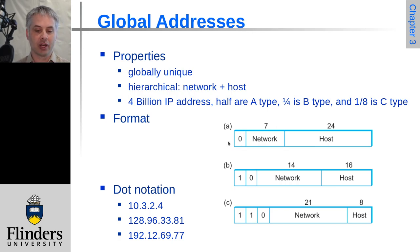So if the first bit is a zero, that's half of the addresses, then it's a type A address. This means there are 7 bits of network address and 24 bits of host address.